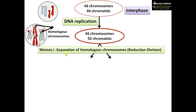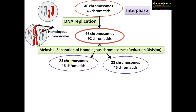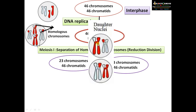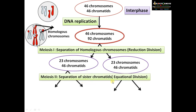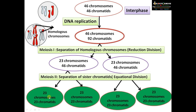During meiosis I, what actually happens is the separation of homologous chromosomes. These chromosomes are separated and what we get is two cells of 23 chromosomes each, and the chromatids are also reduced to 46. That is why meiosis I is called reduction division — 46 chromosomes reduced to 23, and 92 chromatids reduced to 46. In meiosis II, separation of sister chromatids happens, just like mitosis. 23 chromosomes are distributed into two cells, each having 23 chromosomes and 23 chromatids.